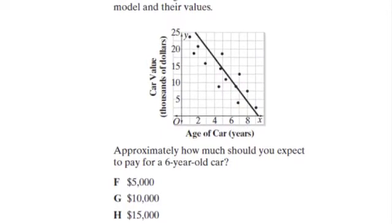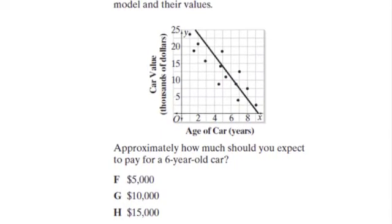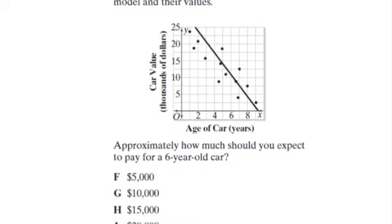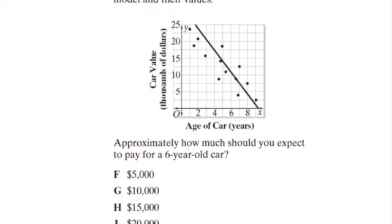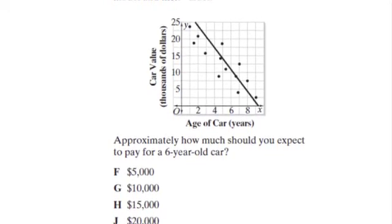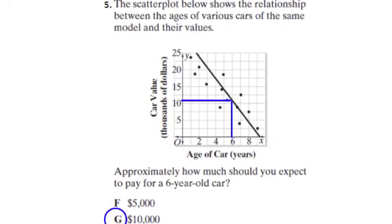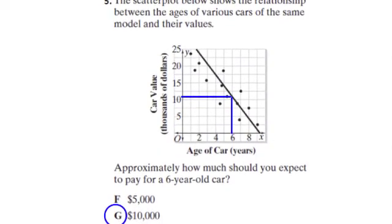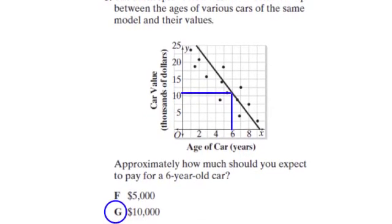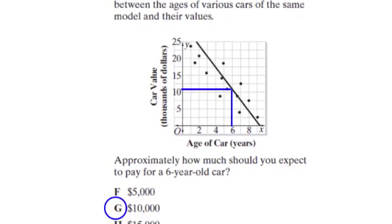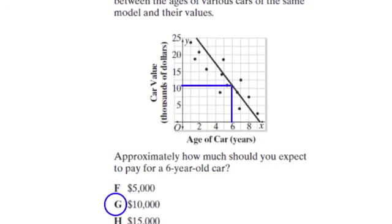In the last example, we're comparing the age of a car to its value. And so if we want to know how much a car would be valued at six years, we would take a plot at six years and see about where we cross the trend line, which actually happens at $10,000. And so we would expect that at six years, a car would be valued at $10,000.